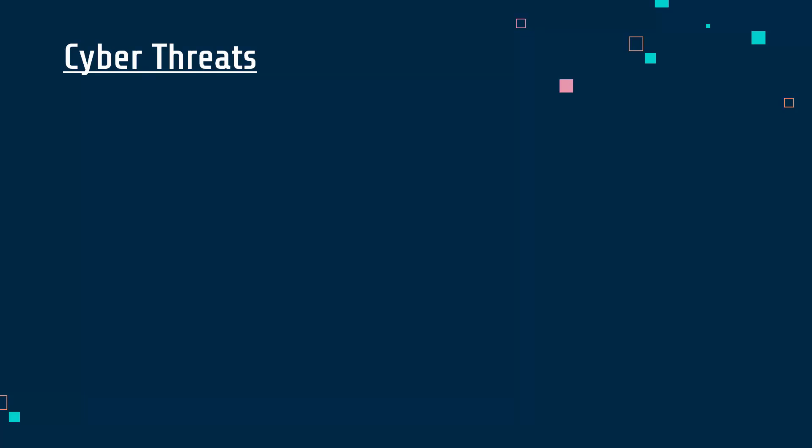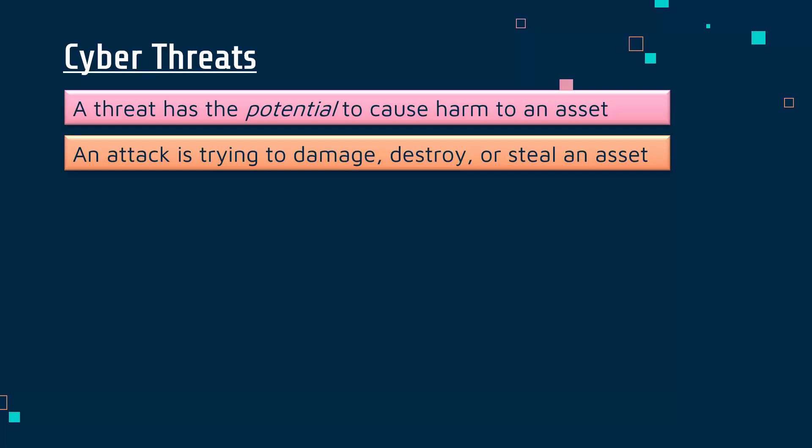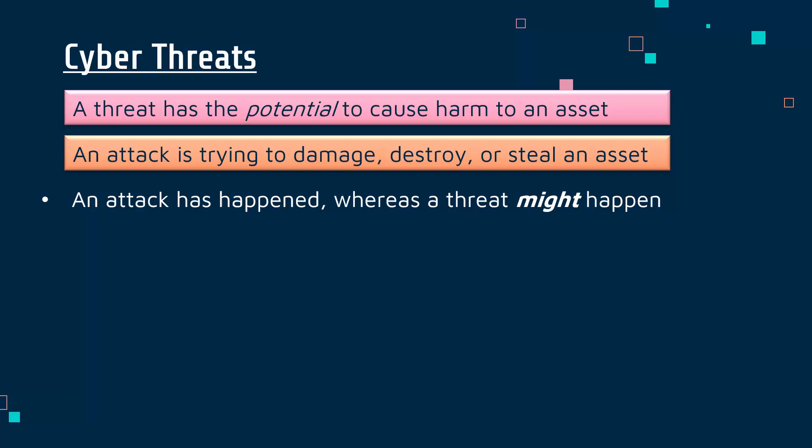There is a subtle difference between an attack and a threat, so it's worth distinguishing between the two. A threat has the potential to cause harm to an asset — it's not actually happening yet. A threat can be both an intentional or an unintentional act, because you could have a threat of flooding or fire that would potentially cause harm to an asset, but it's not intentional. An attack, however, is where you are actually trying to damage, destroy or steal an asset. An attack has happened or is happening, whereas a threat might happen.